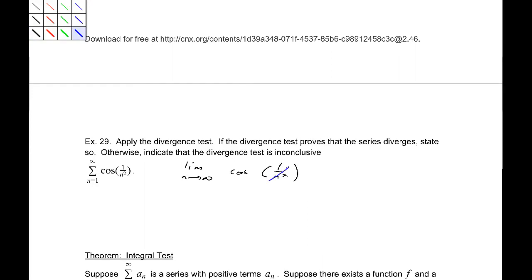So, this is going to 0, which means that our limit is 1. Therefore, that series, cosine of 1 over n squared, diverges because it is not 0.